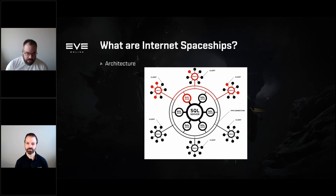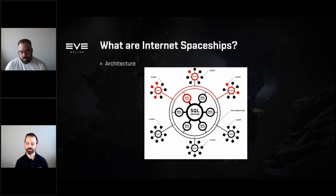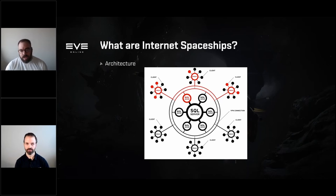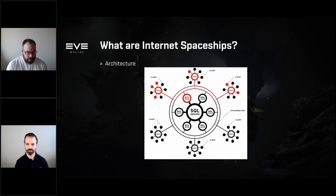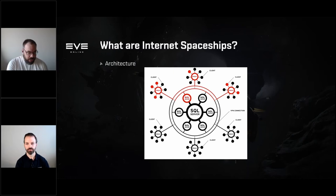Outside the database, we have what we call our 'sole servers.' These operate services like when you dock at a station, operate the market, or go into industry and start building things. The sole servers are also responsible for the simulation aspect of space — flying in space and simulating events and interactions between players. Proxies surround the sole servers; our players connect into the proxies, which act as a firewall or authoritative barrier into the sole servers. EVE Online is a single universe — 'New Eden' runs on one public server called Tranquility, a single shard with no regional separation.